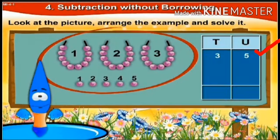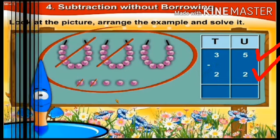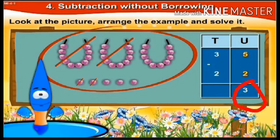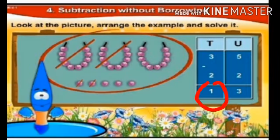Five units in the units column, three tens in the tens column. Out of this, two tens and two units are removed. Starting from the units place: five units minus two units is three units. Moving to the tens: three tens minus two tens is one tens. The answer is one tens and three units, which means thirteen.